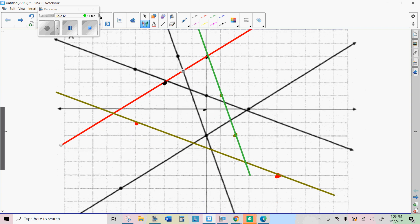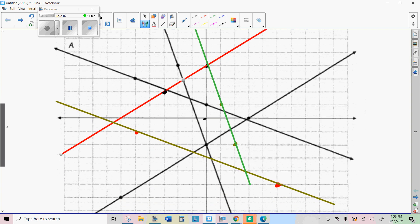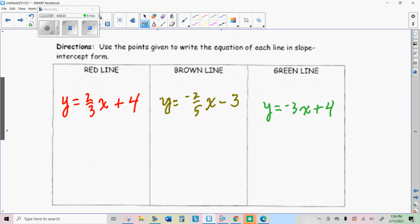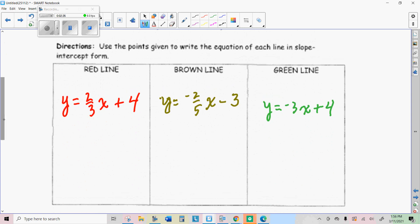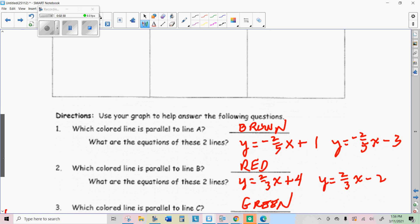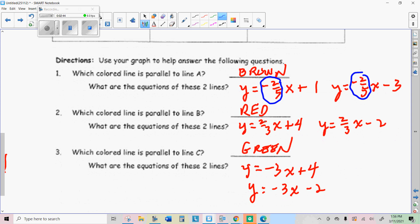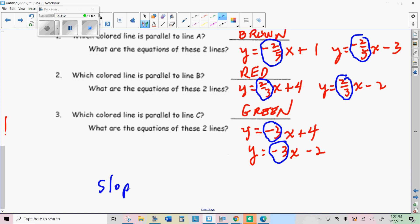Here's what I got. In this one, we're looking for parallel lines. You should have gotten that parallel to A is the brown line. Parallel to line B is the red line. Notice this about the slopes. We can generalize that and say that the slopes of parallel lines are equal.